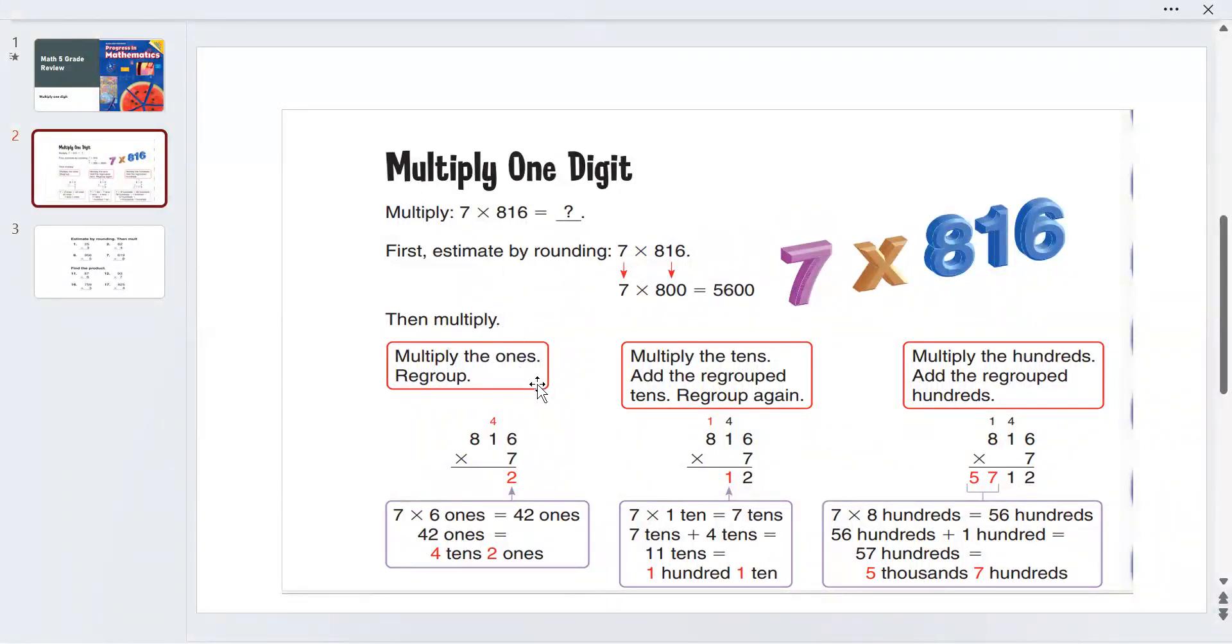Multiply the ones and regroup. 7 times 6 is 42. 42 ones: we write 2, and 4 tens goes up.